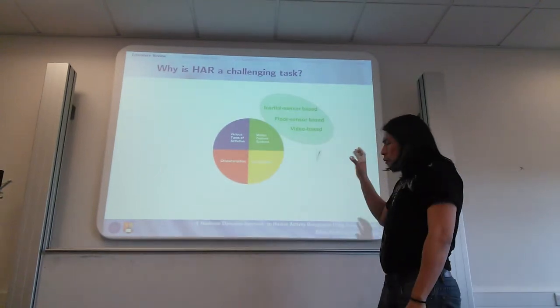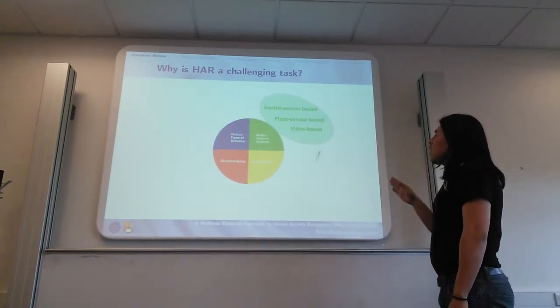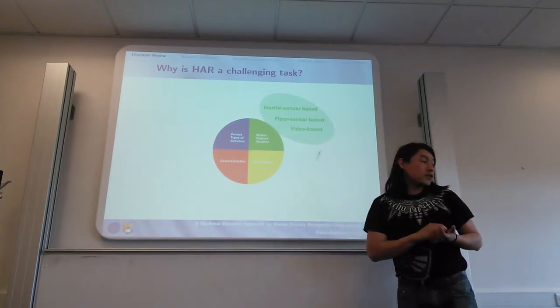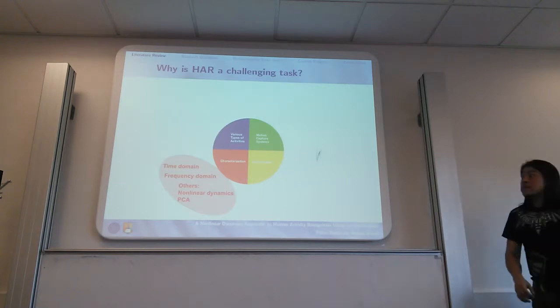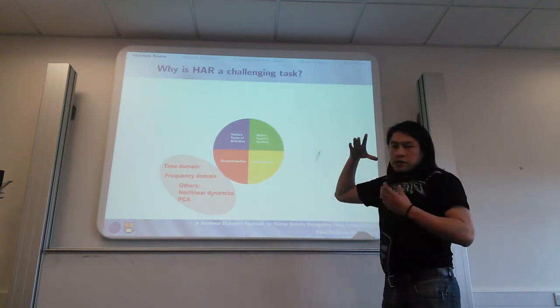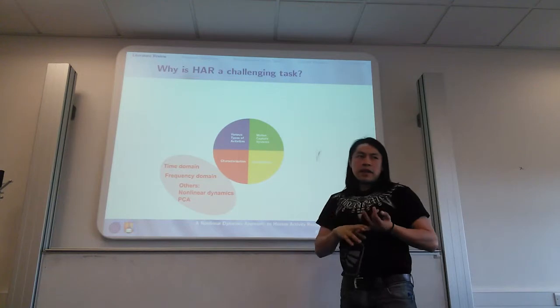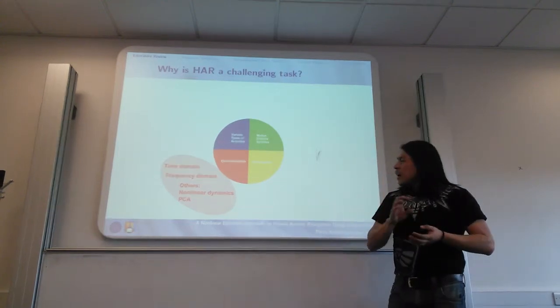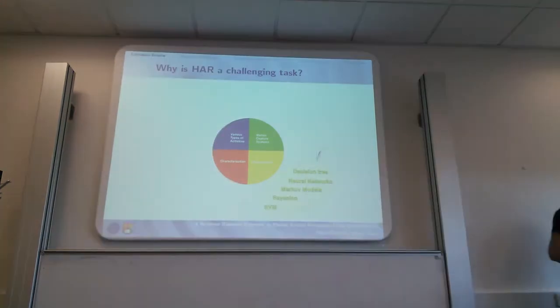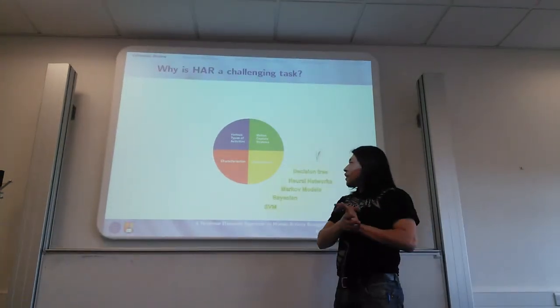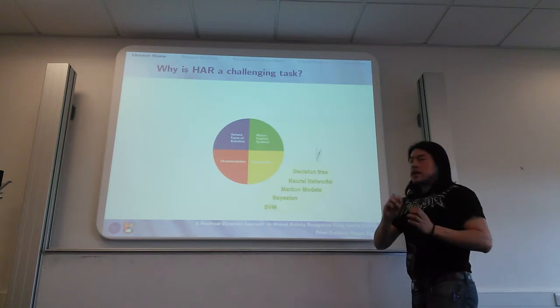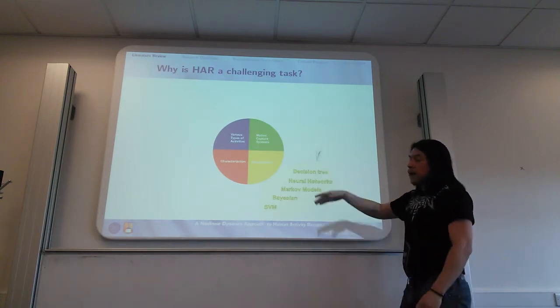On the other hand, we have different motion capture systems in which there are mainly three: inertial sensors, floor sensors, and video-based sensor motion capture systems. Once we have decided which motion capture system, we have to characterize the signals by using time domain or frequency domain techniques, and there are others like nonlinear dynamics concepts or principal component analysis. Then once we have characterized the signal, part of the human activity recognition is to classify these different signals by using different algorithms.